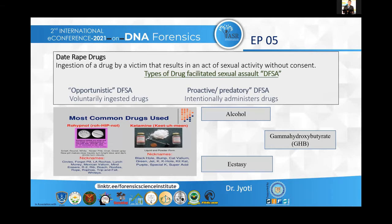Date rape drugs involve the ingestion of a drug by a victim that results in an act of sexual activity. These drugs are classified into two types: opportunistic and proactive. Opportunistic DFSAs are those in which a victim voluntarily ingests a drug and an alleged assailant takes advantage of the victim who has ingested the drug.